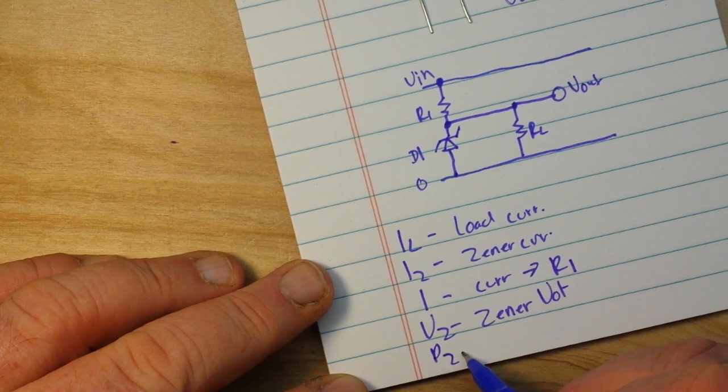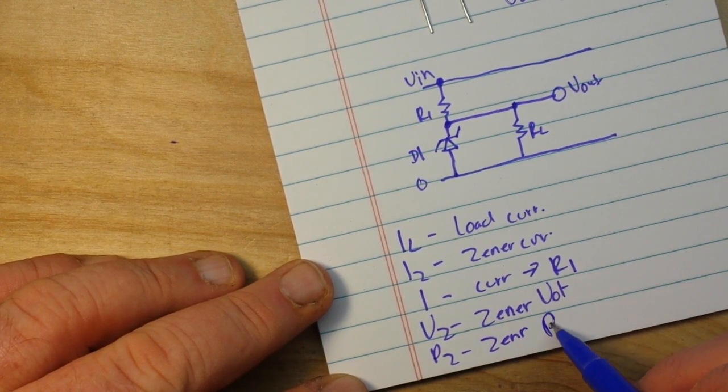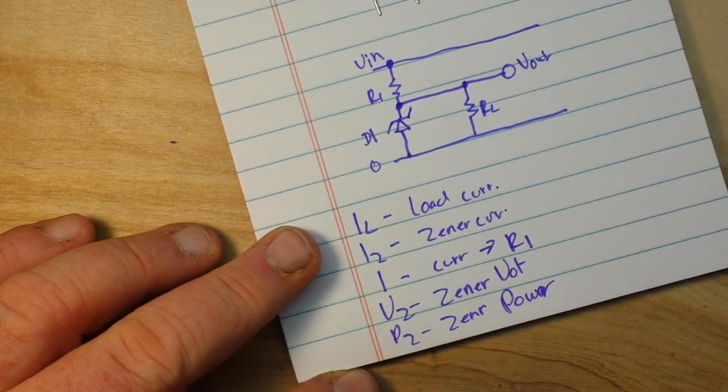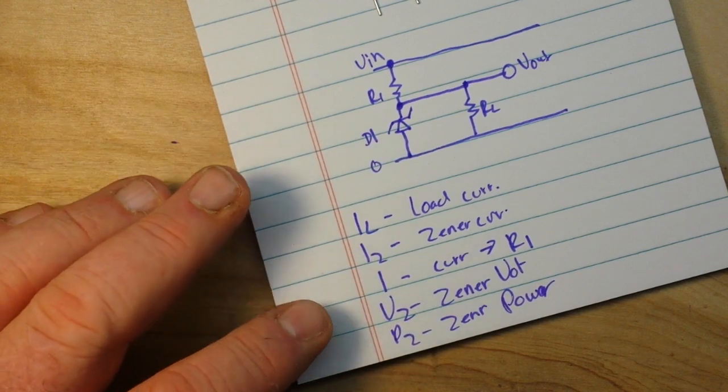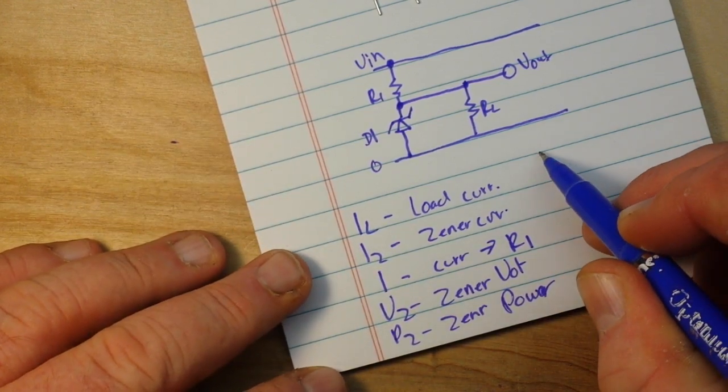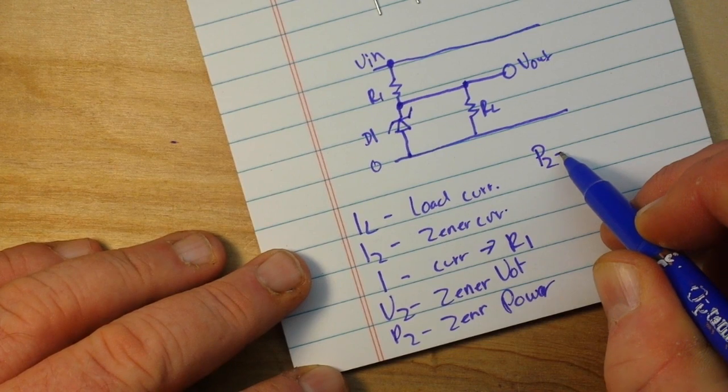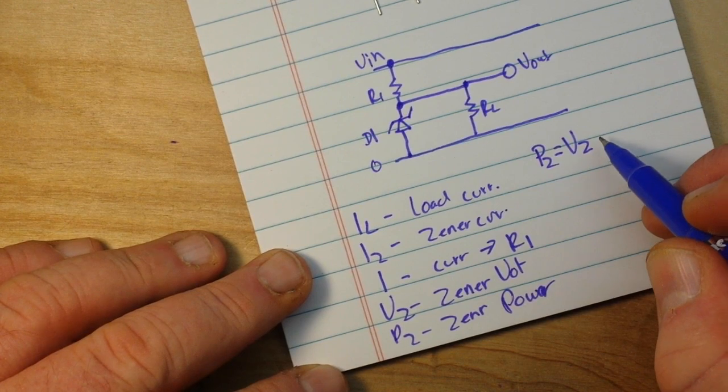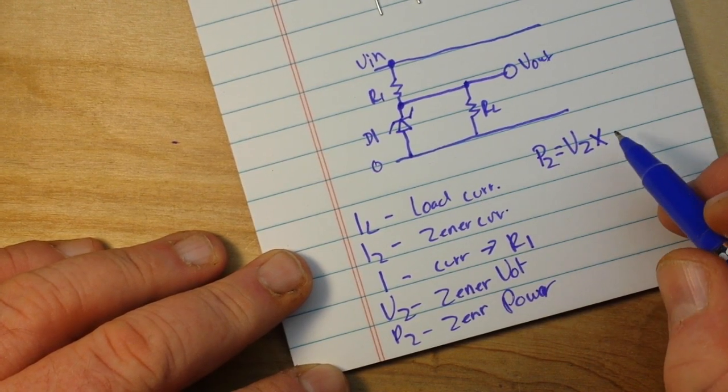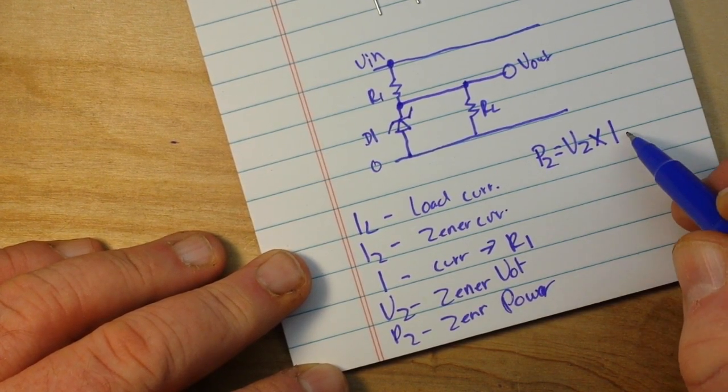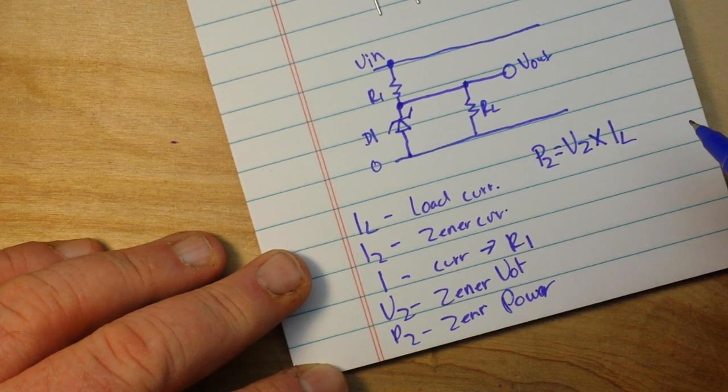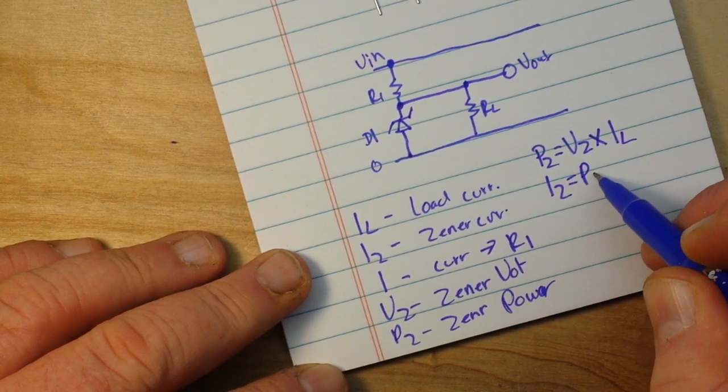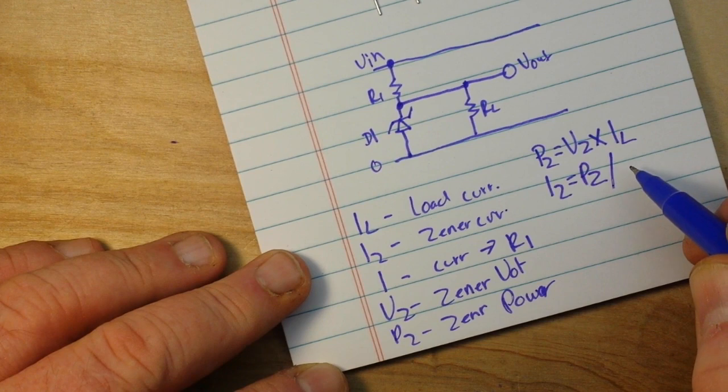So if we put all of those together we can do some simple calculations and we can say that our Zener power PZ is equal to our Zener voltage times our maximum load current. Our Zener current is equal to our Zener power divided by our Zener voltage.